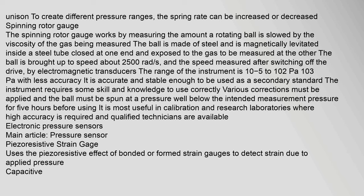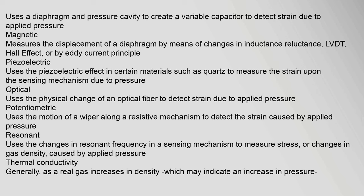Electronic pressure sensors include several types: piezo-resistive strain gauges, which use the piezo-resistive effect of bonded strain gauges to detect strain due to applied pressure; capacitive sensors, which use a diaphragm and pressure cavity to create a variable capacitor; magnetic sensors, which measure displacement of a diaphragm by changes in inductance, reluctance, LVDT, Hall effect, or eddy current; piezoelectric sensors using the piezoelectric effect in materials such as quartz; optical sensors using physical change of an optical fiber; potentiometric sensors using motion of a wiper along a resistive mechanism; and resonant sensors using changes in resonant frequency to measure stress or gas density caused by applied pressure.